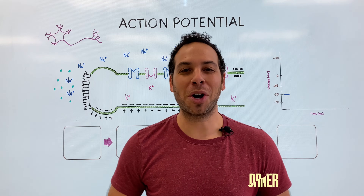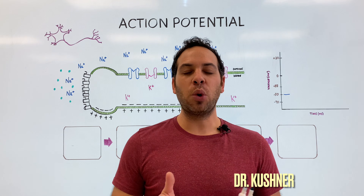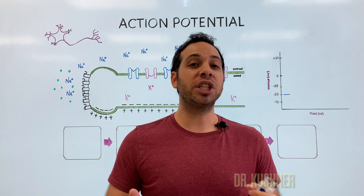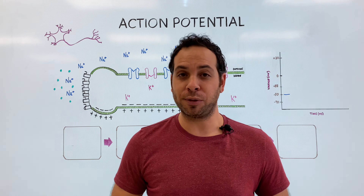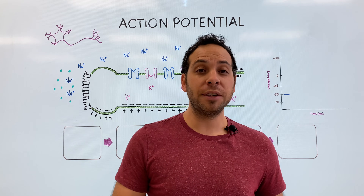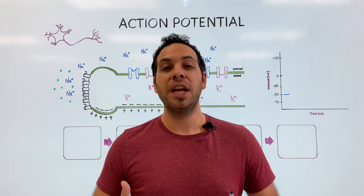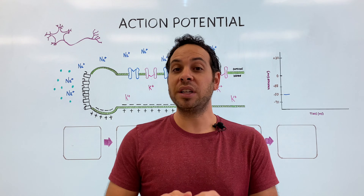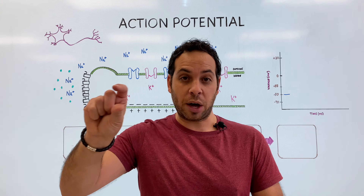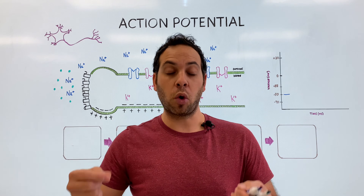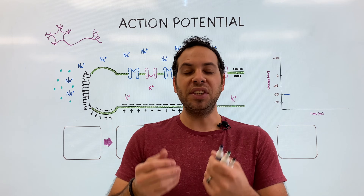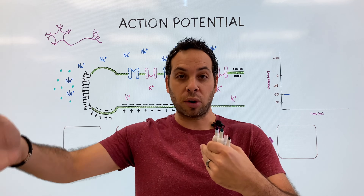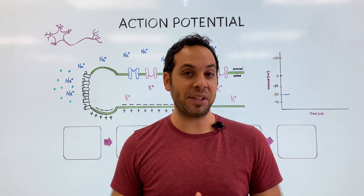Welcome to Psych Explained. In this video, we're going to break down an action potential. If you look at different textbooks, you might see different names for it — a neural impulse, nerve impulse, or spark — but essentially it means the same thing. It is a brief electrical charge that travels down a neuron, or more specifically, the axon. This is going to allow neurons to communicate with each other and get the message across, whatever that message may be.